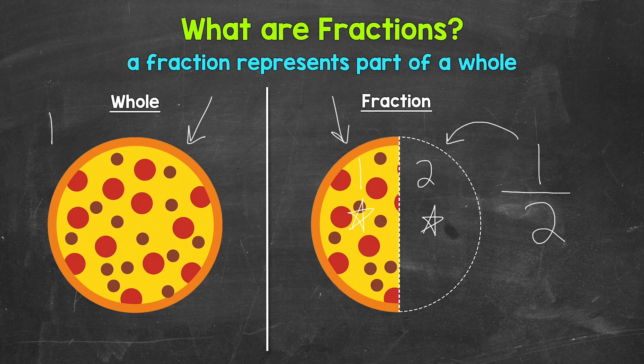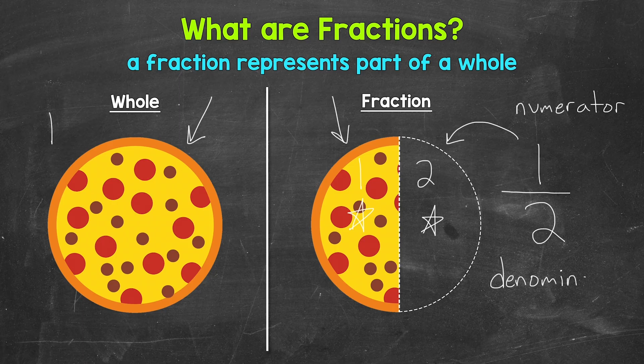Now, before we move on to more examples, I do want to cover what the top number of a fraction is called and what the bottom number of a fraction is called. We call the top number of a fraction the numerator. The bottom number of a fraction is called the denominator. Think: denominator down — match those d's and that can help us remember that one.